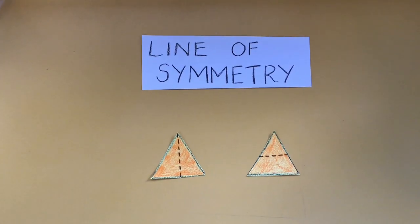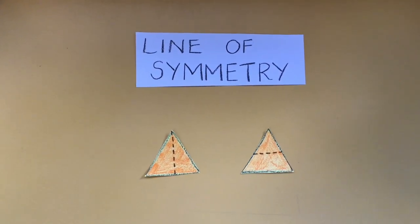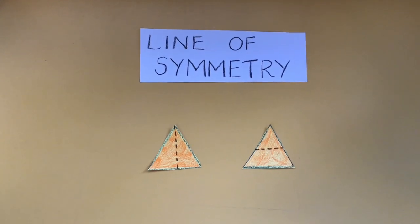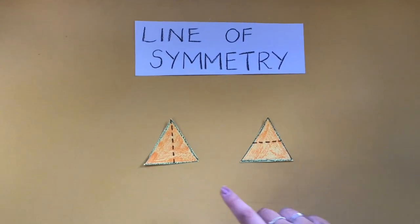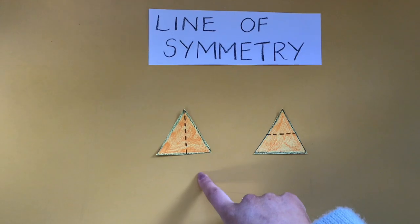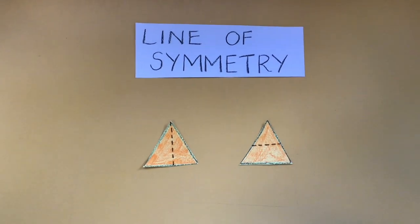On the next page you'll demonstrate line of symmetry. This means choose a shape where you can draw a line down the centre to create two mirror image like shapes. Remember this is different from just cutting the shape in half.